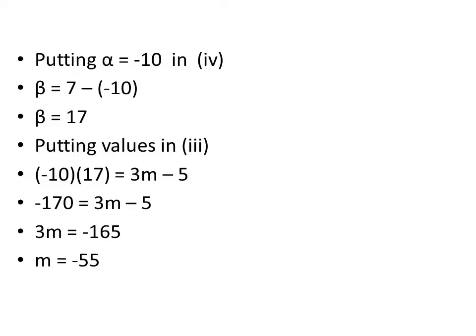Alpha کی value -10 نکال لی تھی، اسے equation 4 میں put کیا: beta = 7 - (-10) = 7 + 10 = 17۔ اب دونوں values — alpha = -10 اور beta = 17 — equation 3 (product of roots) میں put کیں: (-10)(17) = 3m - 5 → -170 = 3m - 5 → 3m = -165 → m = -55۔